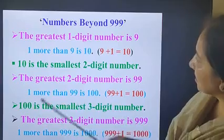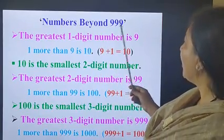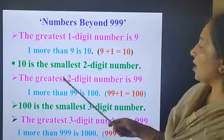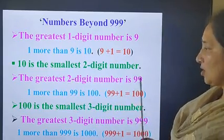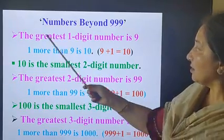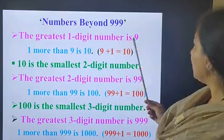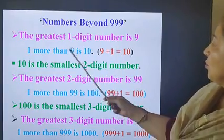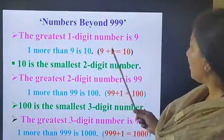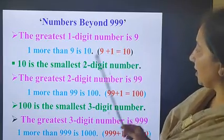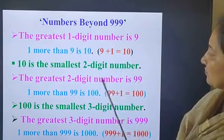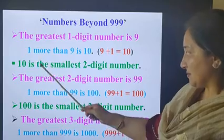Now let's start with numbers beyond 999. Today I would like to tell you about the greatest and the smallest 3-digit number. The greatest 1-digit number is 9. 1 more than 9 is 10. When we add 1 to 9, we get number 10. 10 is the smallest 2-digit number, and we get a new place for 10's place.